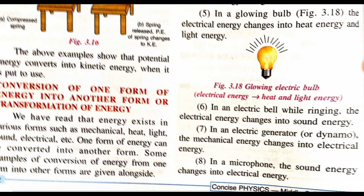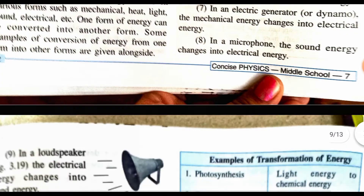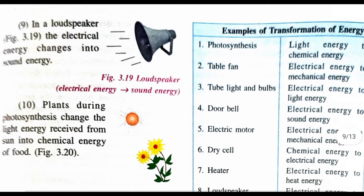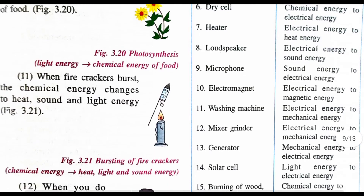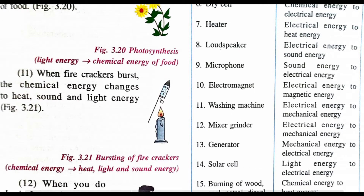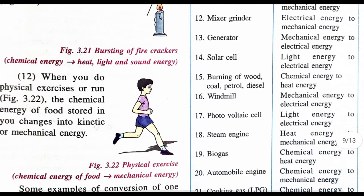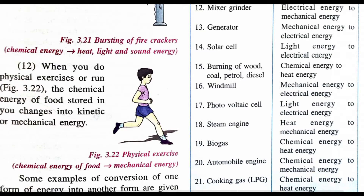In an electrical generator, mechanical energy changes into electrical energy. In a microphone, sound energy is converted into electrical energy. In a loudspeaker, electrical energy is converted into sound energy. During photosynthesis, plants convert light energy into chemical energy and make food. When a firecracker bursts, chemical energy converts into light and sound energy. When you exercise, chemical energy in your body converts to mechanical energy.